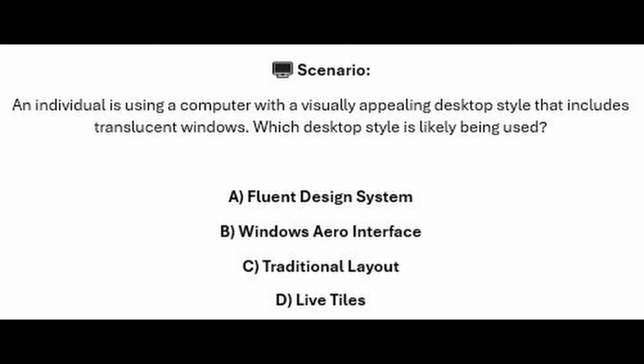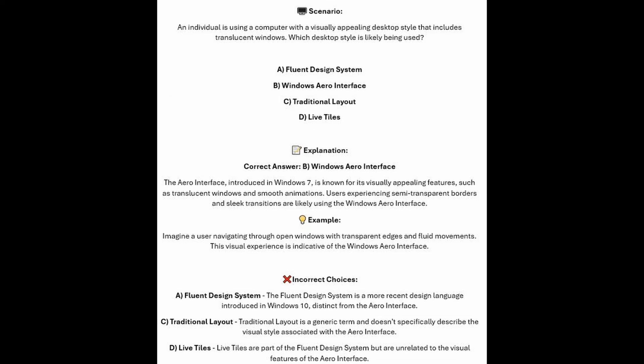Is it A, Fluent Design System? Is it B, Windows Arrow Interface? Is it C, Traditional Layout? Or is it D, Live Tiles? The correct answer is B, Windows Arrow Interface.